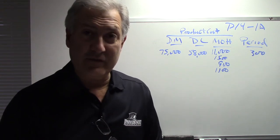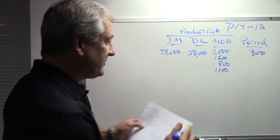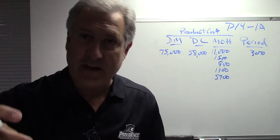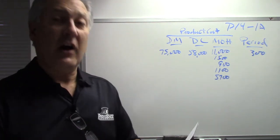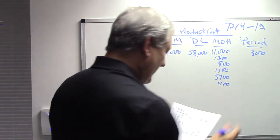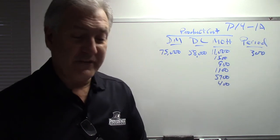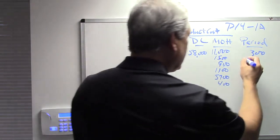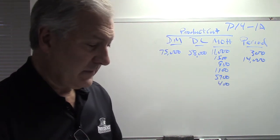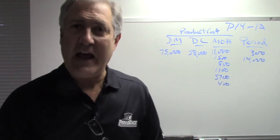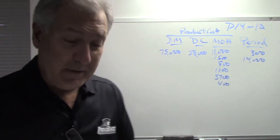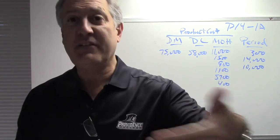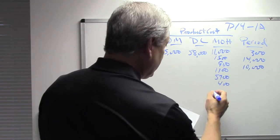Factory manager's salary — operative word is factory; he's not putting it together, so this is manufacturing overhead, $5,700. Property taxes on factory building — operative word is factory, so that is an other factory cost, manufacturing overhead. Advertising for helmets — $14,000 — advertising expense is a non-manufacturing cost, a selling and administrative expense, and a period cost. Sales commission — $10,000 — again a non-manufacturing cost, selling and administrative expense, period cost. Depreciation on factory equipment — $1,500 — operative word is factory; other factory cost, manufacturing overhead.